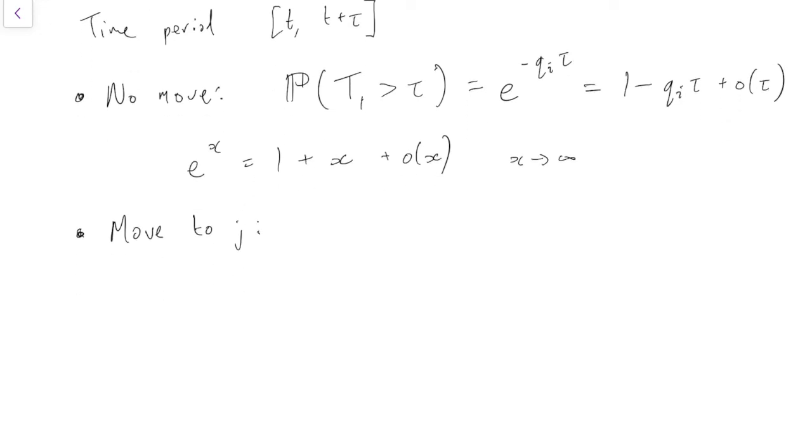Well, first we have to move somewhere at all, which means that the time we wait T1 has got to be less than or equal to tau. And then we actually have to move from i to j, which happens with probability rij.